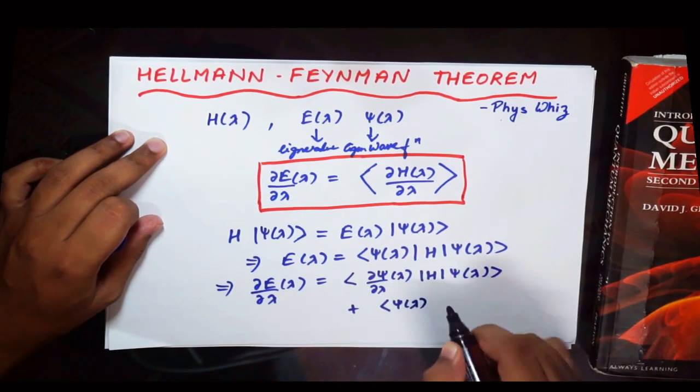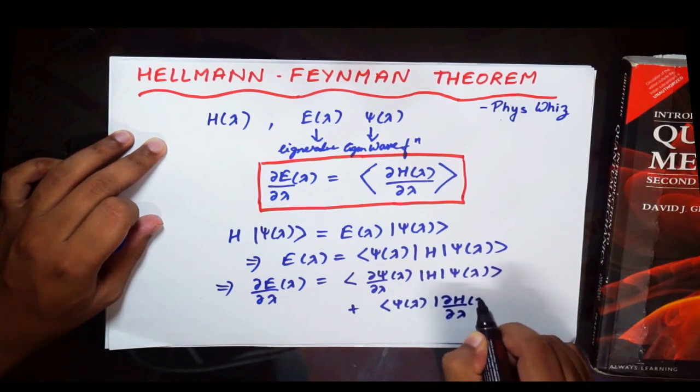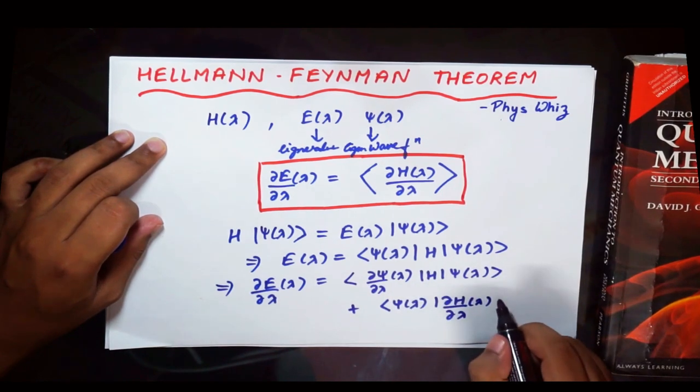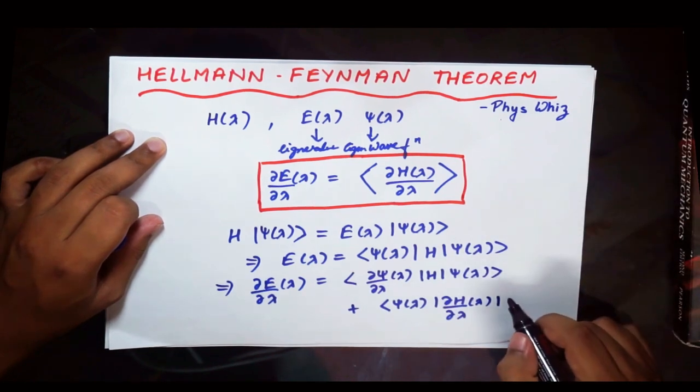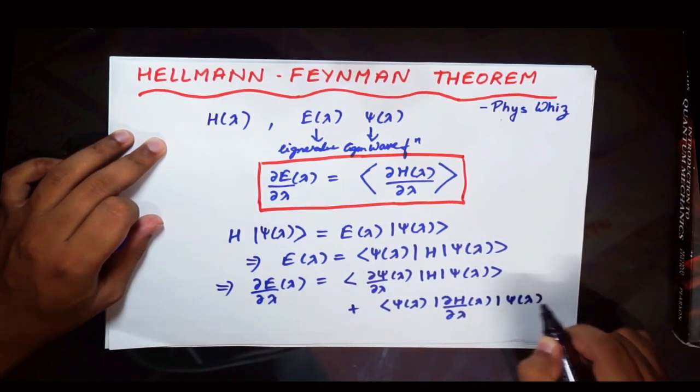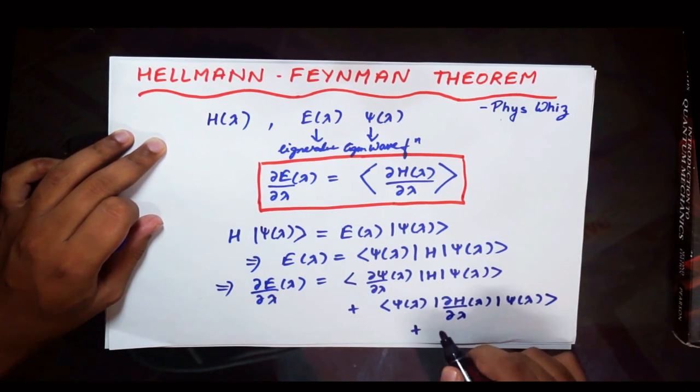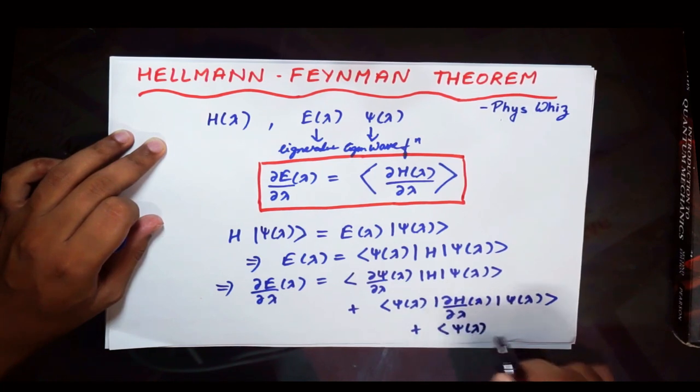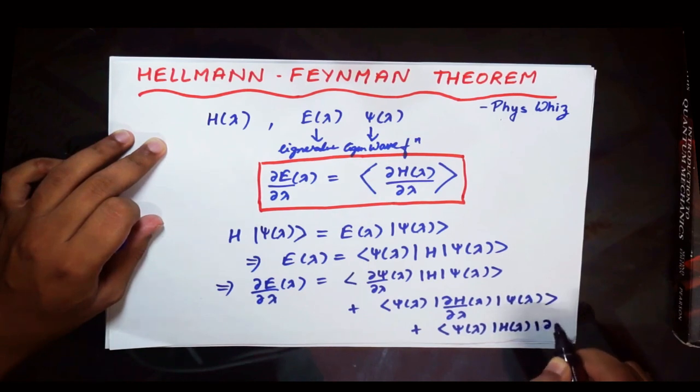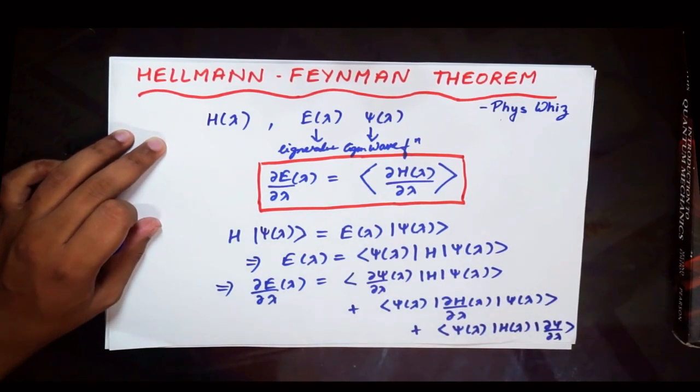Psi of lambda, del H by del lambda, and psi of lambda. And then finally the last term would be psi of lambda, H of lambda, and del psi by del lambda. Alright.